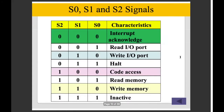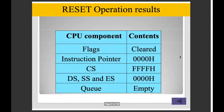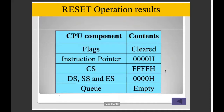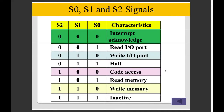In maximum mode, there are 3 pins: S0, S1, and S2, which are status signals from the starting point. For example, whether we want to read or write — we can write this. We can use these status signals with these 3 signals: S0, S1, S2.